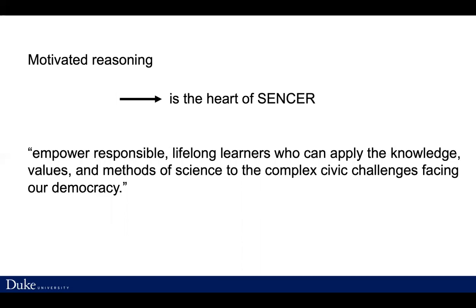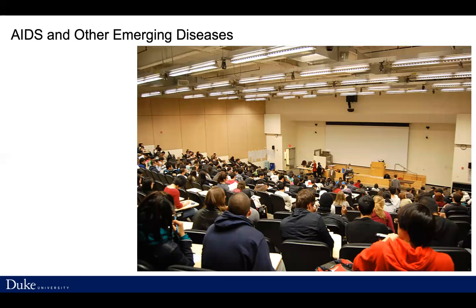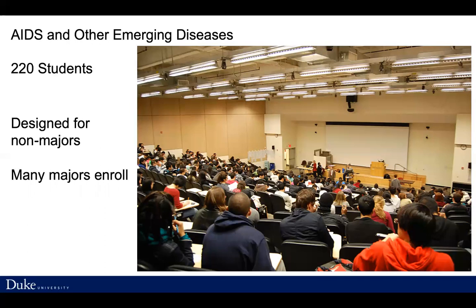There are many ways to motivate people. That is what CENSA has been doing for 20 years through humanitarian issues, social issues, civic issues. I have been doing a CENSA course for almost 20 years called AIDS and Other Emerging Diseases. This is clip art, but it is very typical of how I have to teach in a large auditorium with fixed seats. I usually have 200 to 300 students — it was 220 this spring. This course is designed for non-majors, but many majors enroll because they want that contextualized approach to learning biology.